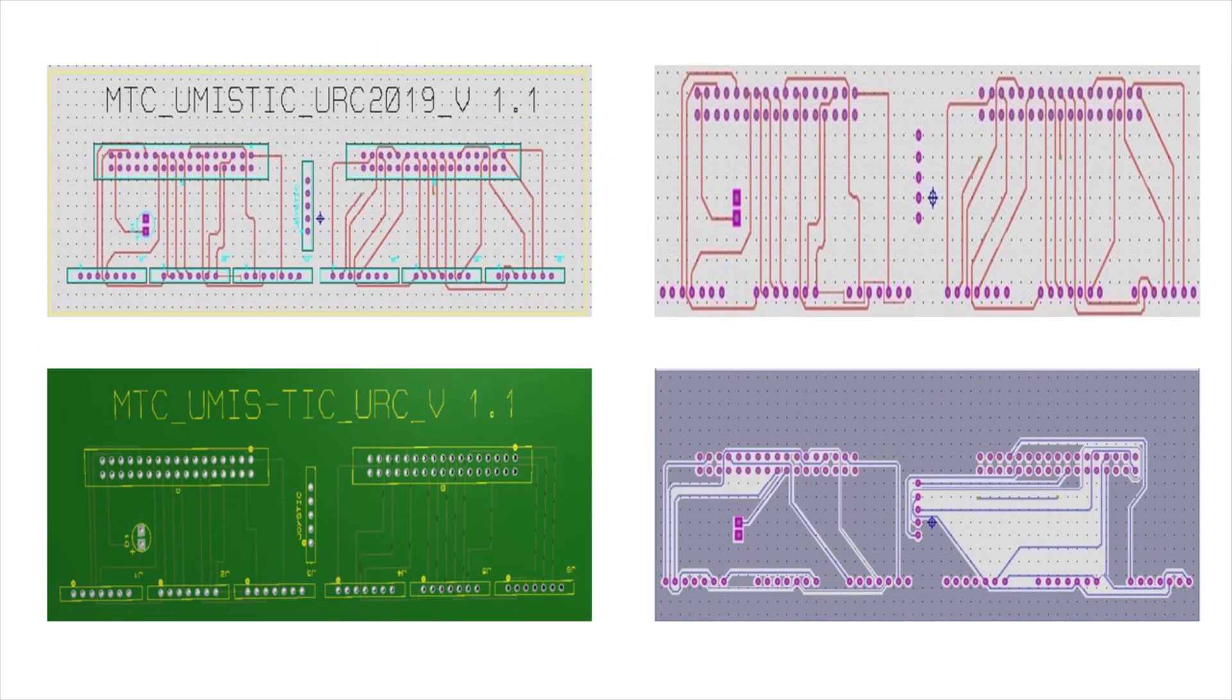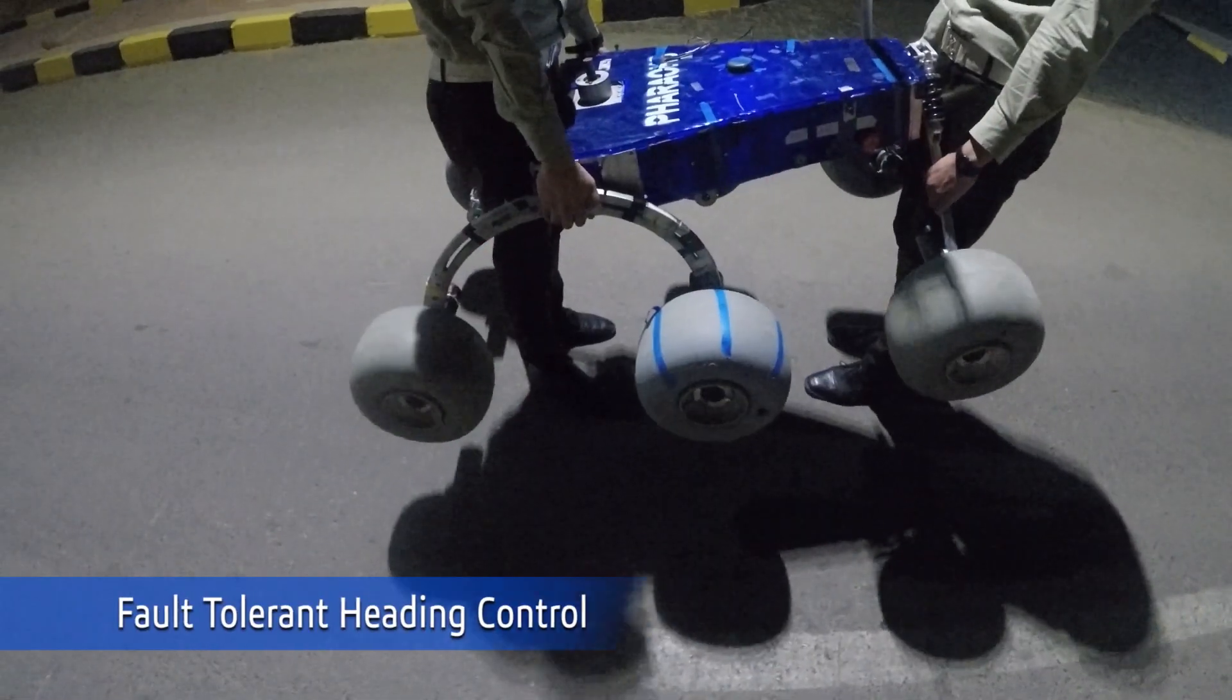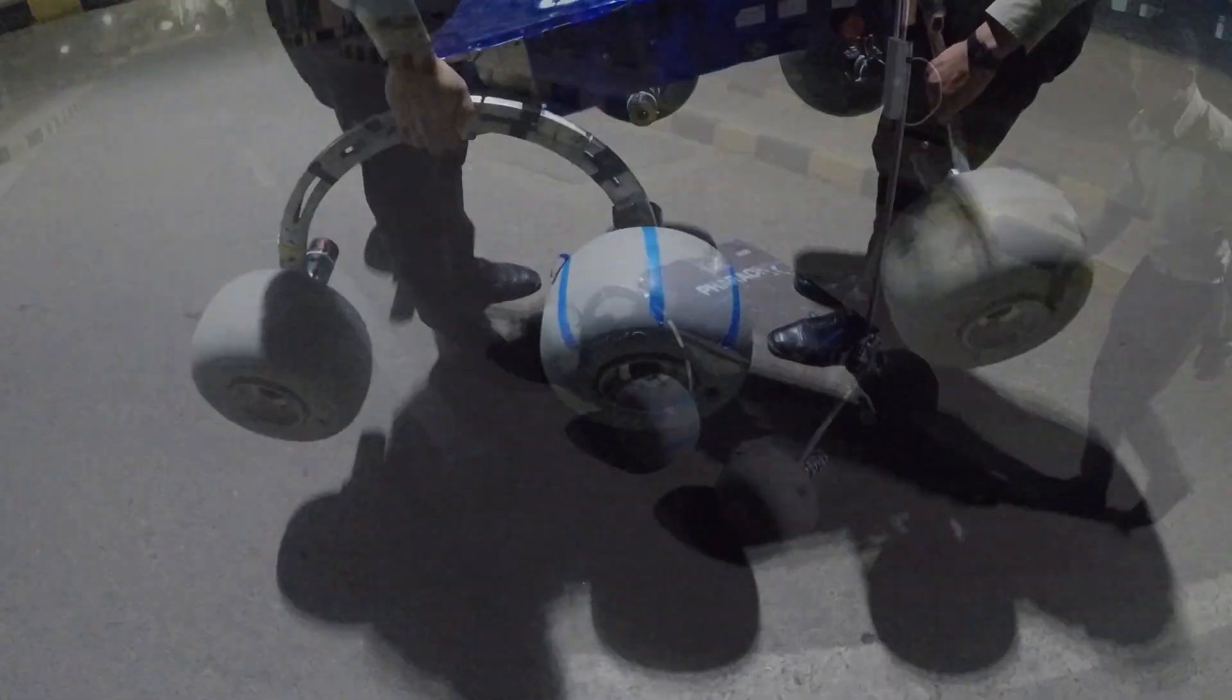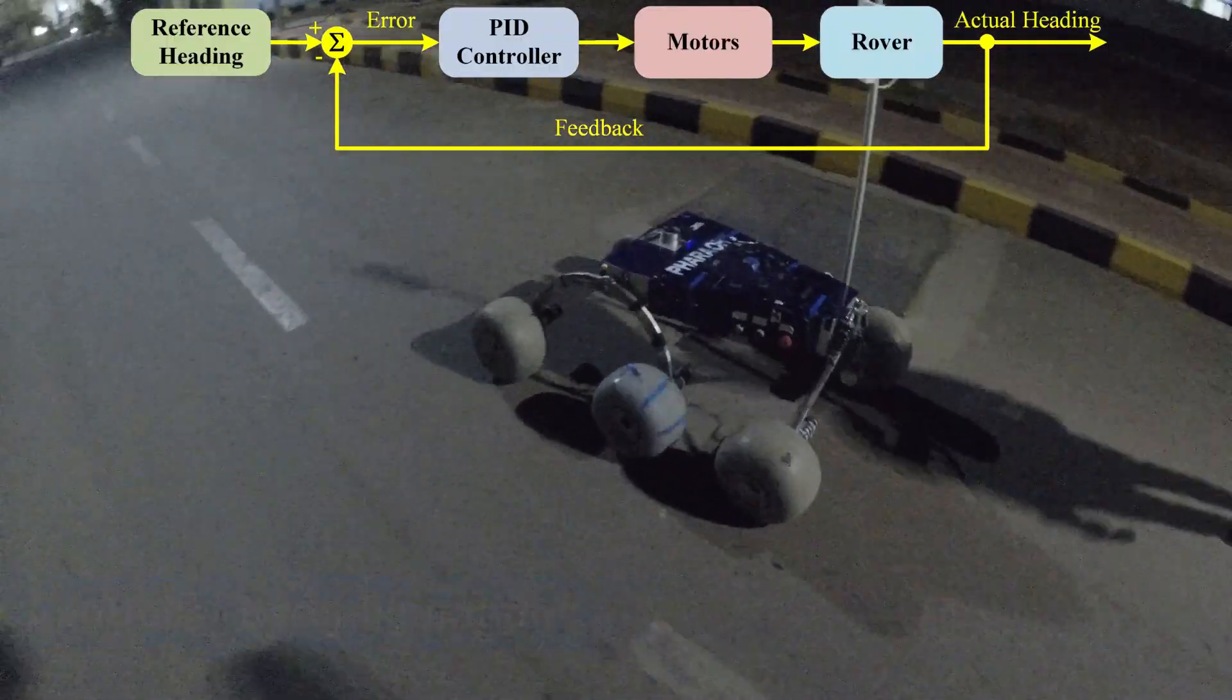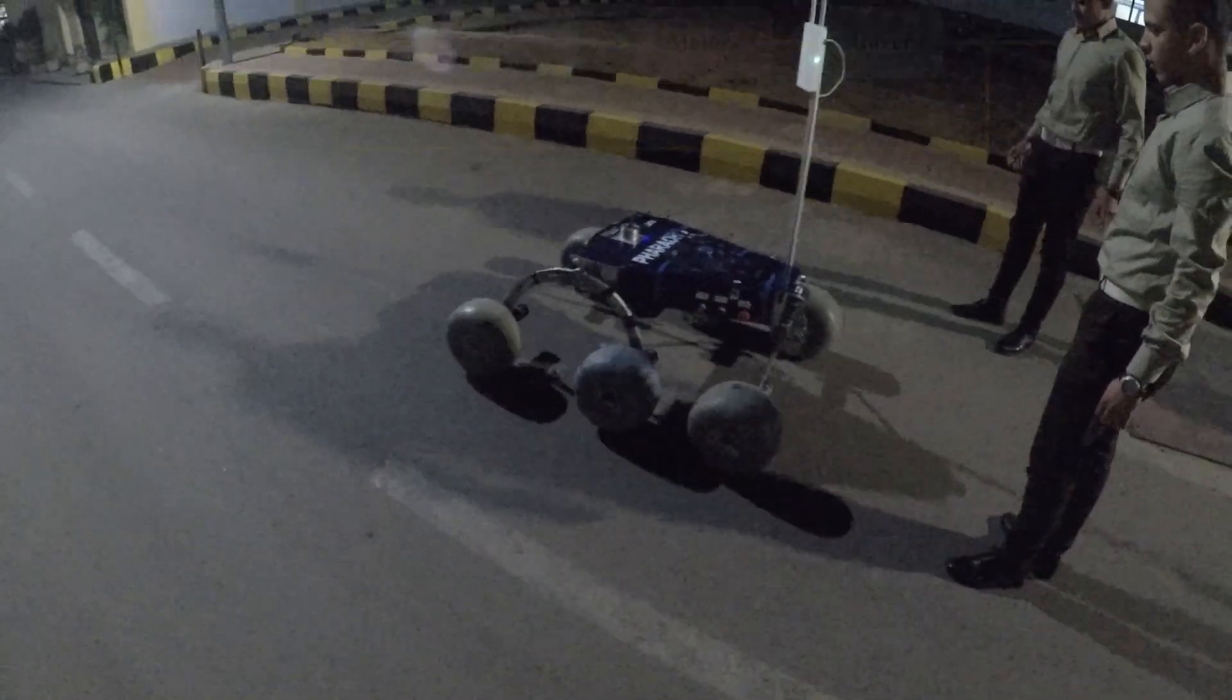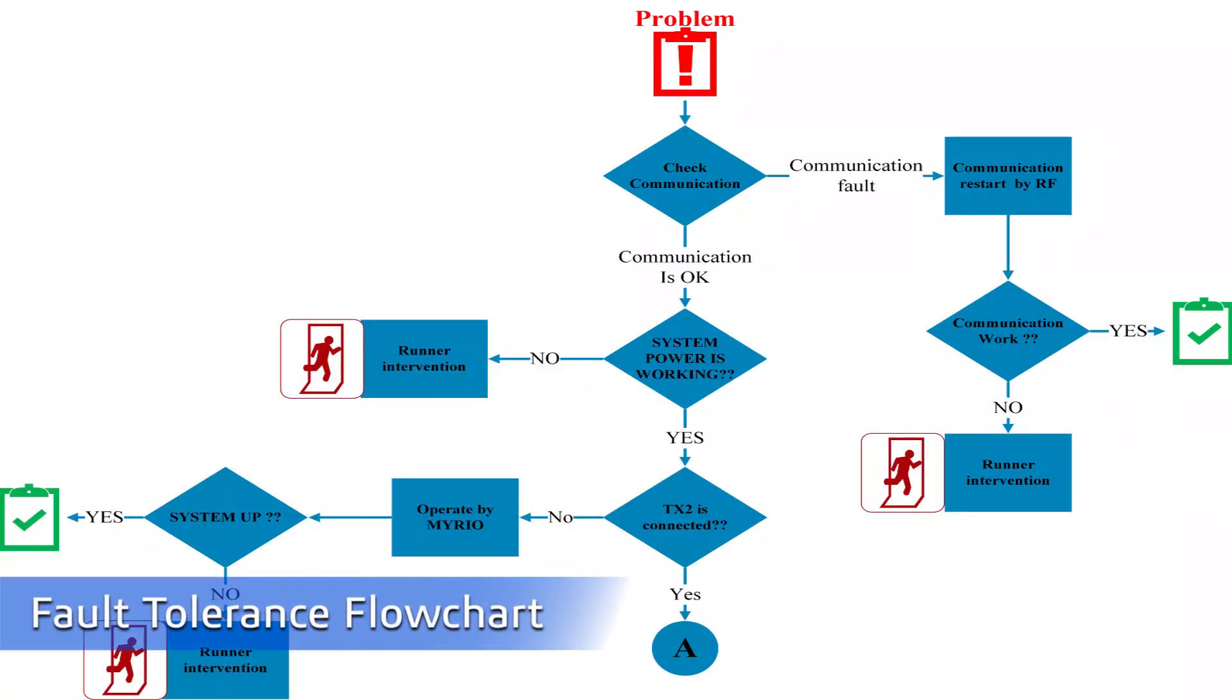For rover control, a PID controller is used to maintain rover heading even in case of failure of any of the motors. Control system is designed with fault tolerance consideration which enables bypassing some of its components in case of failure at expense of some functionalities.